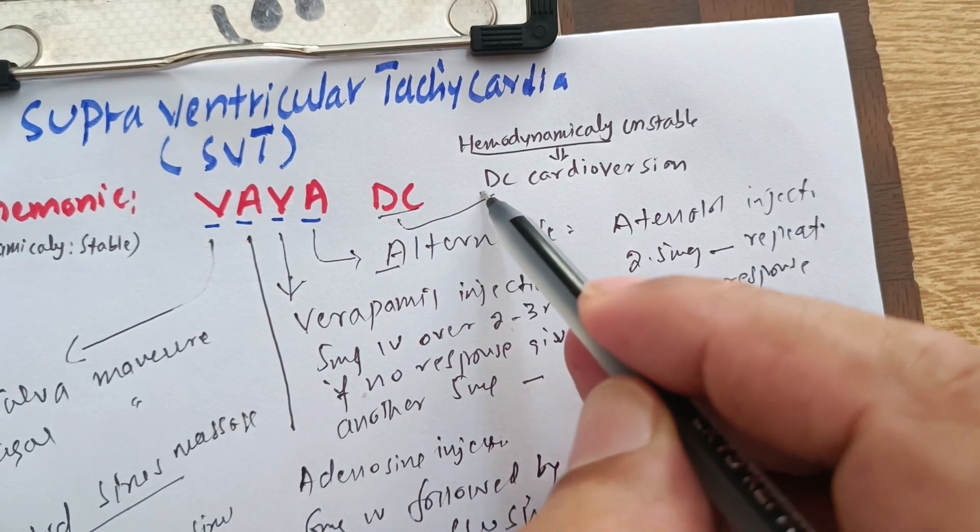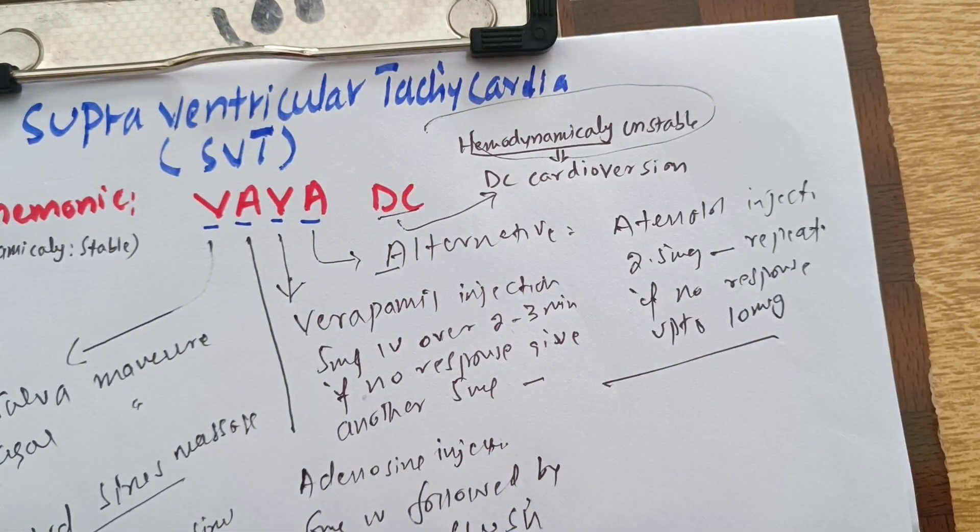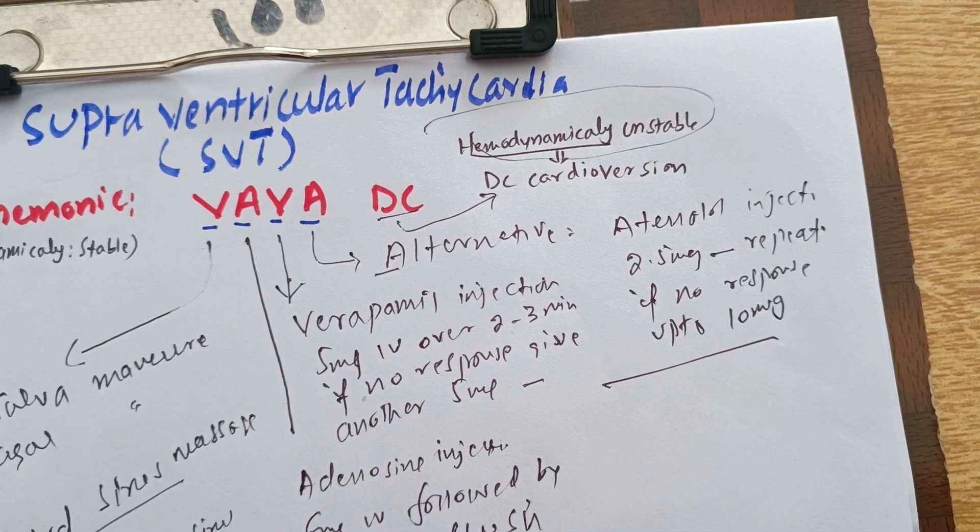If there is no response with these medications, then we will do DC cardioversion, which we also do if the patient is hemodynamically unstable.